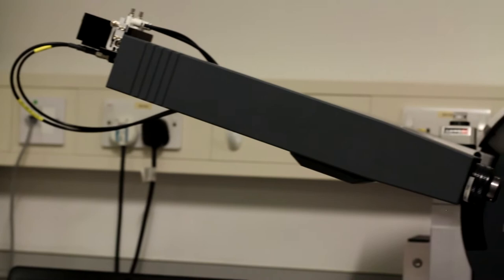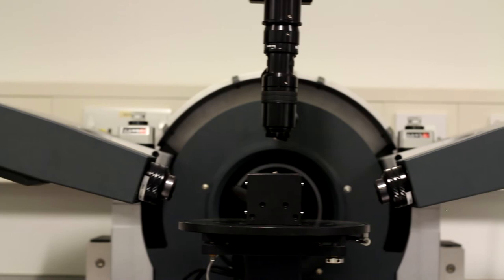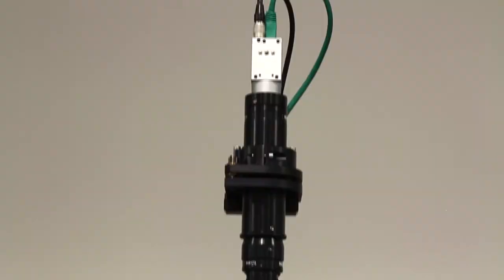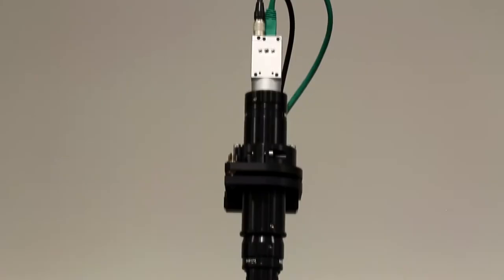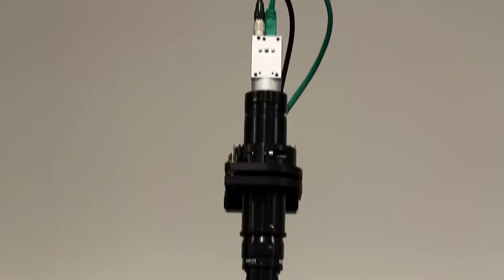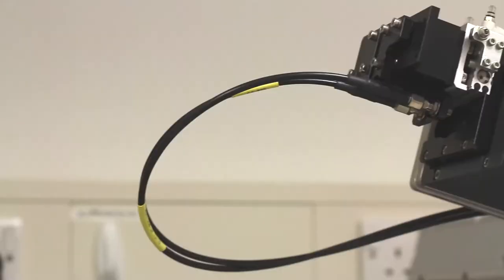Ellipsometry is a technique to measure the thickness and optical constants of a wide range of thin film materials. It utilizes elliptically polarized light that interacts with the material, causing change in phase and amplitude of the light. From this information we can then use mathematical models to calculate the thickness and the optical constants of the thin film.